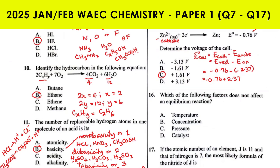Of the following factors, the one that does not affect the equilibrium position of an equilibrium reaction is the catalyst. The catalyst increases the rates of both the forward and backward reactions equally, helping the reaction attain equilibrium faster. It does not shift the equilibrium position and therefore has no effect on the yield of product formed.